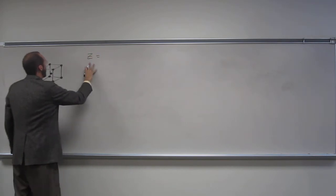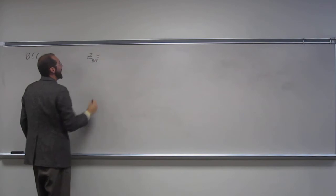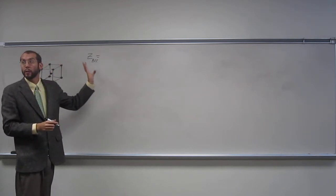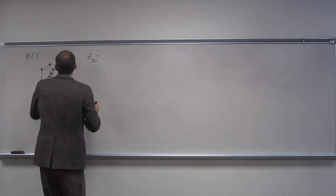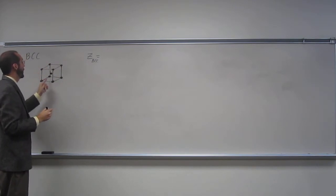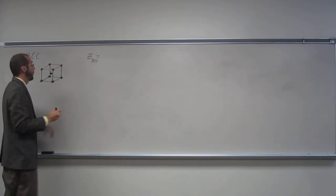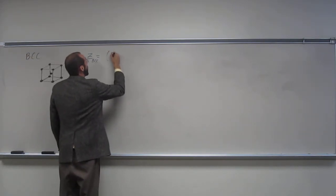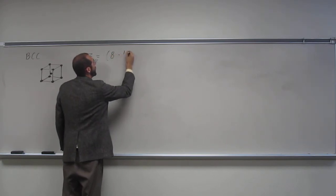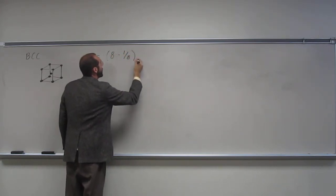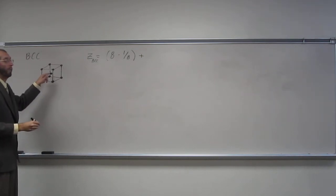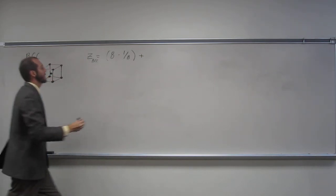The number of lattice points for a body center is very similar to the simple cubic, where you have one atom on each of the points there. So it's going to be eight times one divided by eight. But you have to add that one, the full atom that's inside the unit cell.